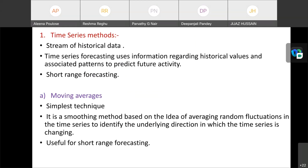First one is time series method. It's a stream of historical data. Time series forecasting uses information regarding historical values and associated patterns to predict future activity. It is a short range forecasting method. In that time series method, it includes moving averages. It's a simplest technique. It is a smoothing method based on the idea of averaging random fluctuations in the time series to identify the underlying direction in which time series is changing. It's also useful for short range forecasting.